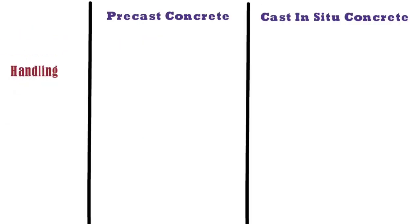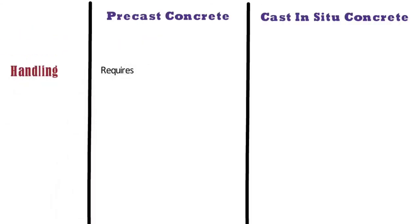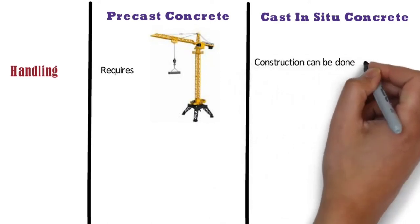Precast concrete requires heavy machinery and cranes for handling, i.e., lifting and installation of heavy elements. In case of cast in situ concrete method, the construction can be done without cranes.